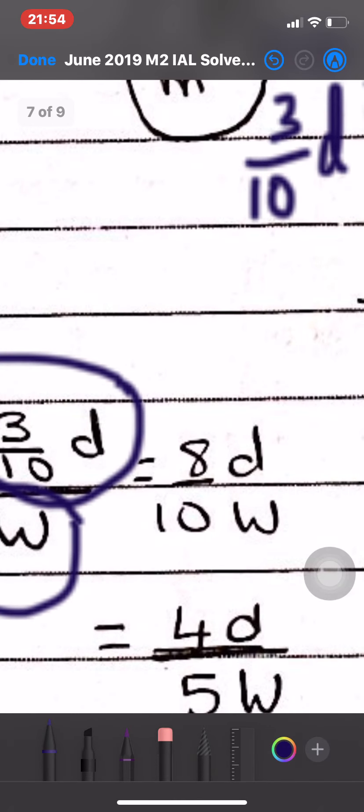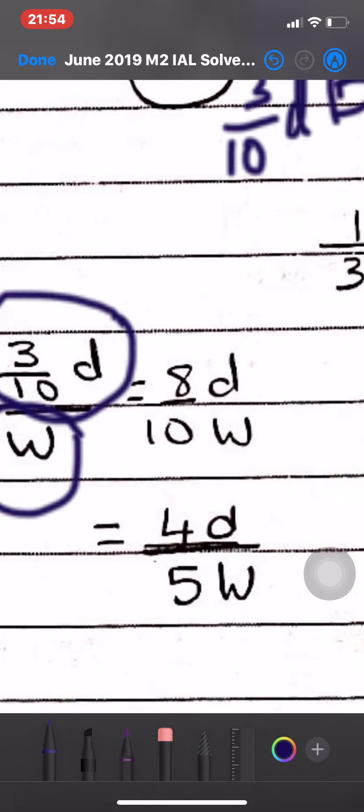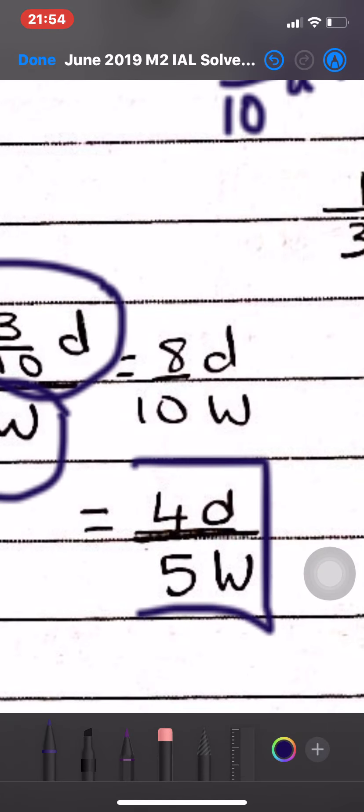Plus the W over the W, which is the speed. If we add them together, it will be 8D over 10W. If we simplify, it will be 4D over 5W. That is the answer.